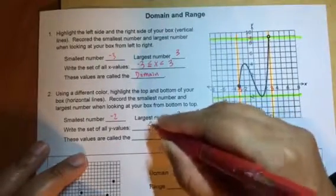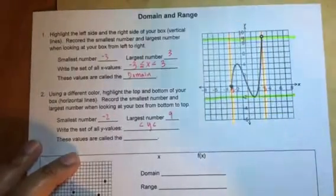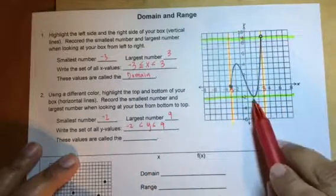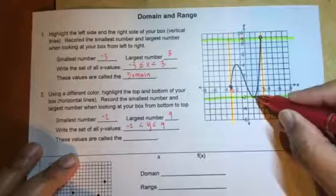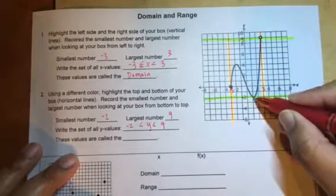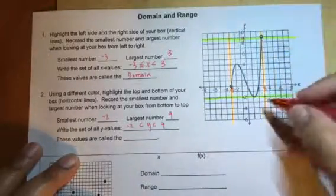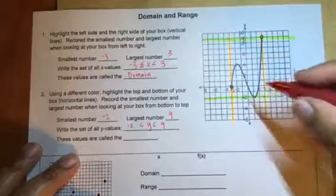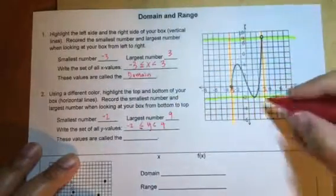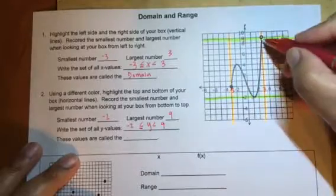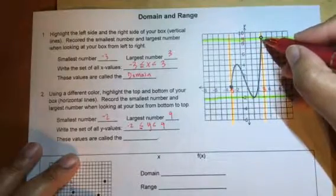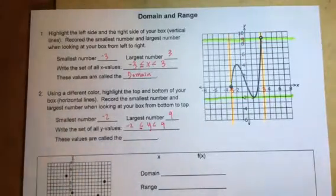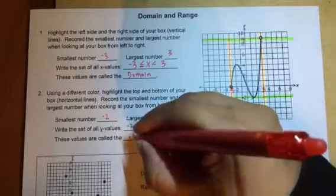Again when it looks like this you start like that. The lower number goes on the left and your larger number goes on the right. Here, unless you see an open circle, you do not need a line. This is a closed circle or closed point for all intents and purposes. You don't see an open circle. This is an open circle. Since it has an open circle you don't need that line underneath. Your last part, these values are called your range.